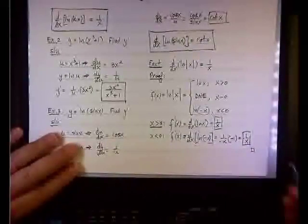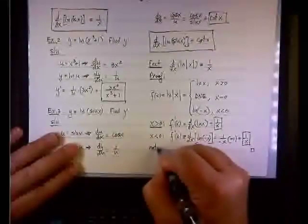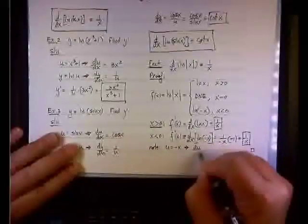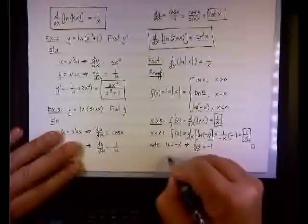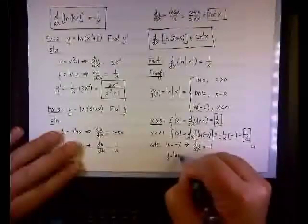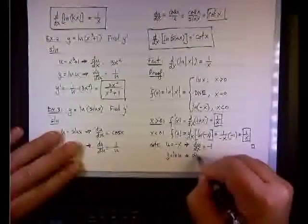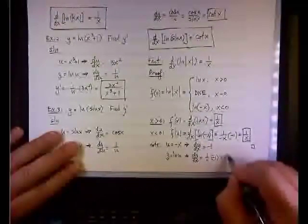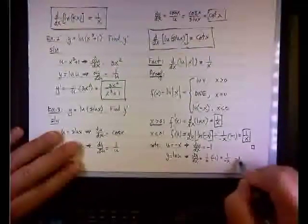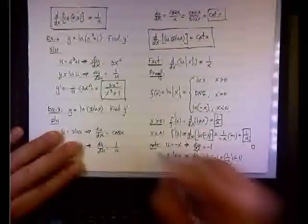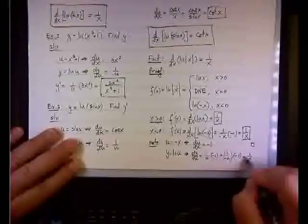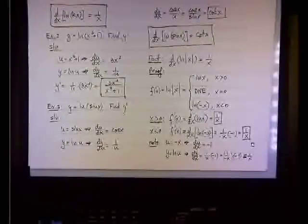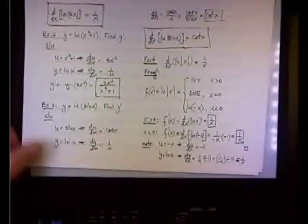Okay, so this completed proof. The note here, we substituted, we let u equals negative x, and therefore, du dx was negative 1, and y was natural log of u, and therefore, dy du was 1 over u, times negative 1, or 1 over negative x, times negative 1. So this is what happened in accomplishing these results, in obtaining these results. So we prove that little fact that the derivative of the absolute value of x is also 1 over x.